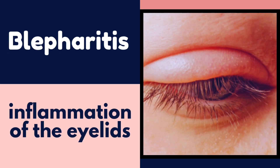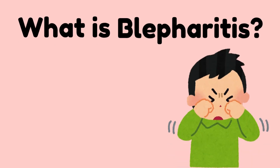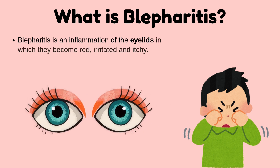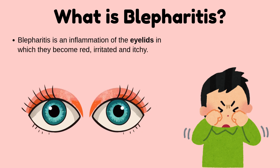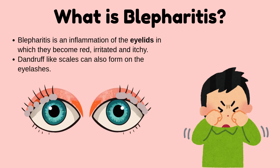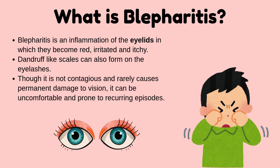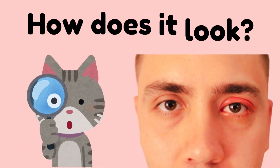Blepharitis is the inflammation of the eyelids. It is a condition in which the eyelids become red, irritated, and itchy. Dandruff-like scales can also form on the eyelashes. Though it is not contagious and rarely causes permanent damage to vision, it can be uncomfortable and prone to recurring episodes.